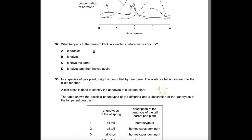Question 32: What happens to the mass of DNA in a nucleus before mitosis occurs? Mitosis produces genetically identical cells, unlike meiosis which halves DNA. Before mitosis, the DNA must double so that each daughter cell receives the correct chromosome number. It does not stay the same, halve, or halve twice — those describe meiosis. Answer: A, the mass of DNA doubles.